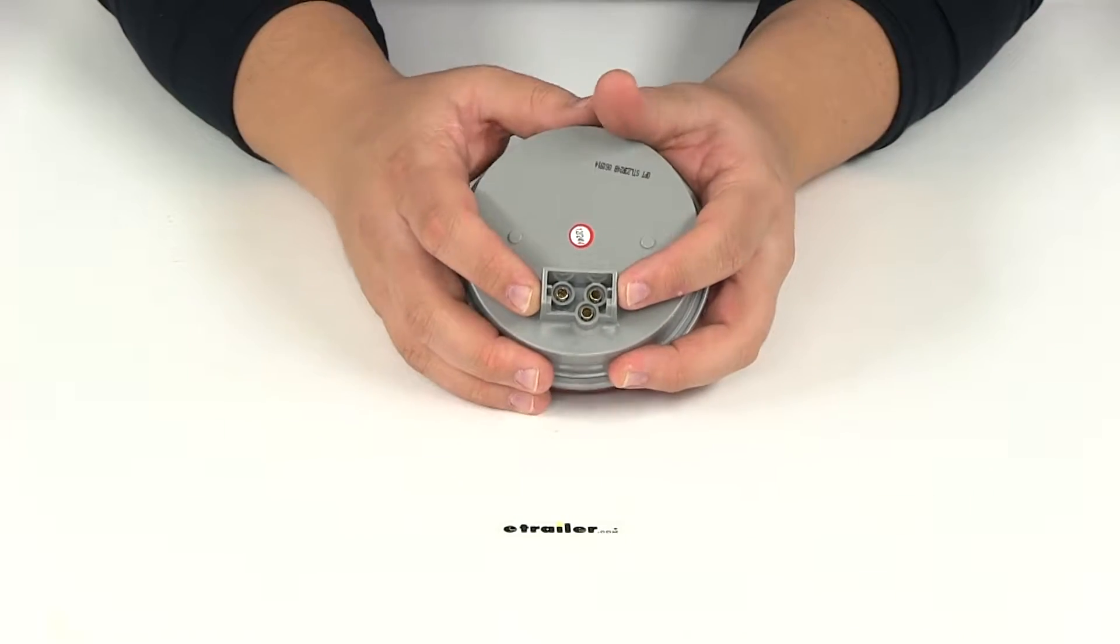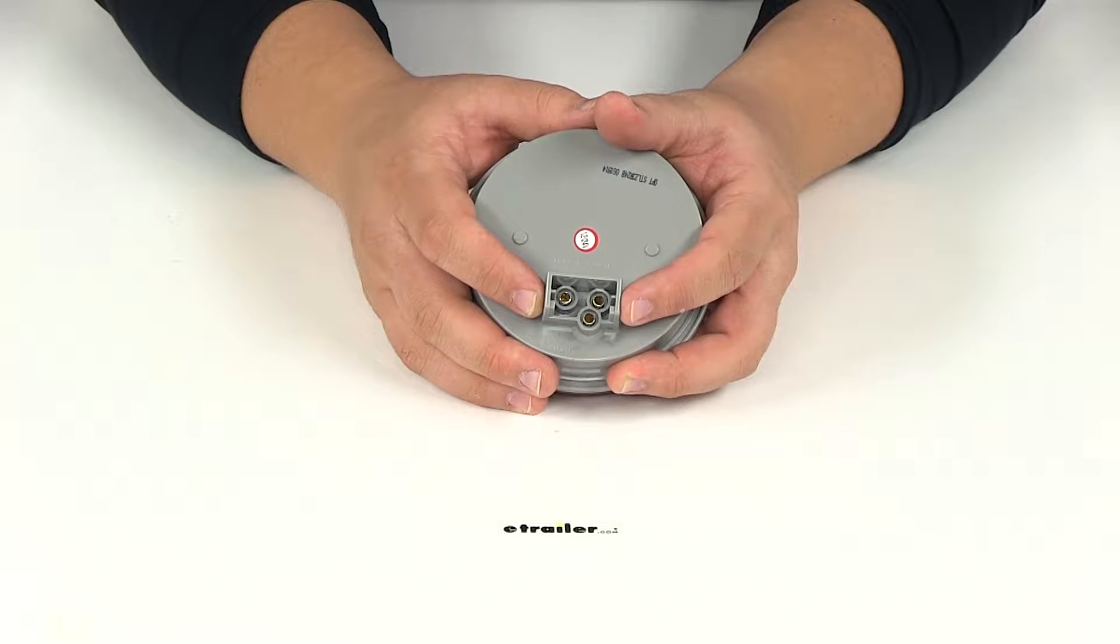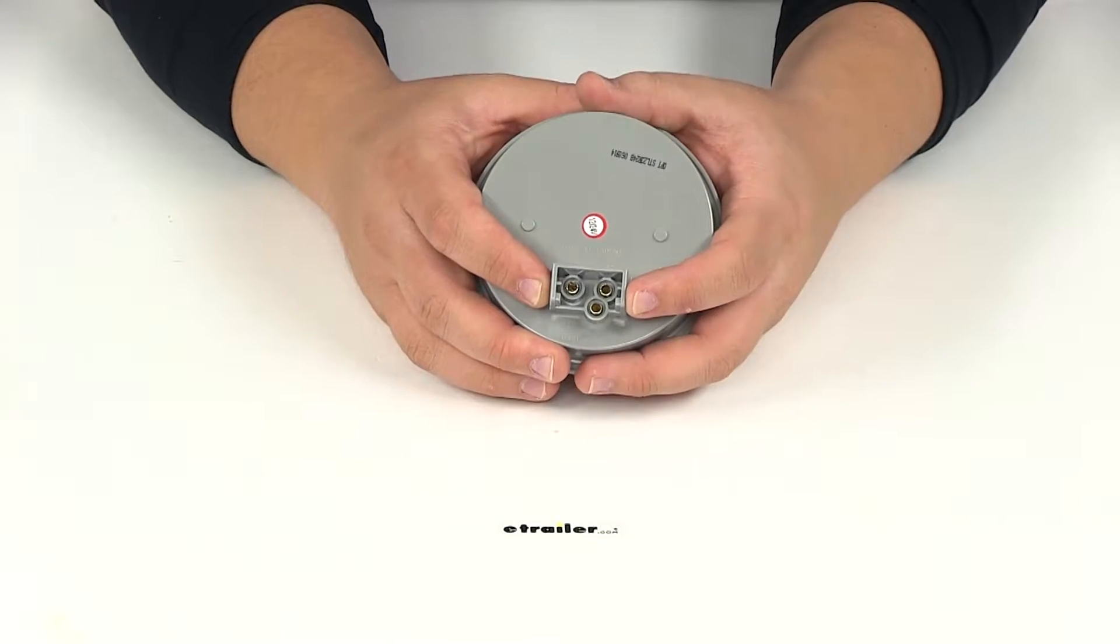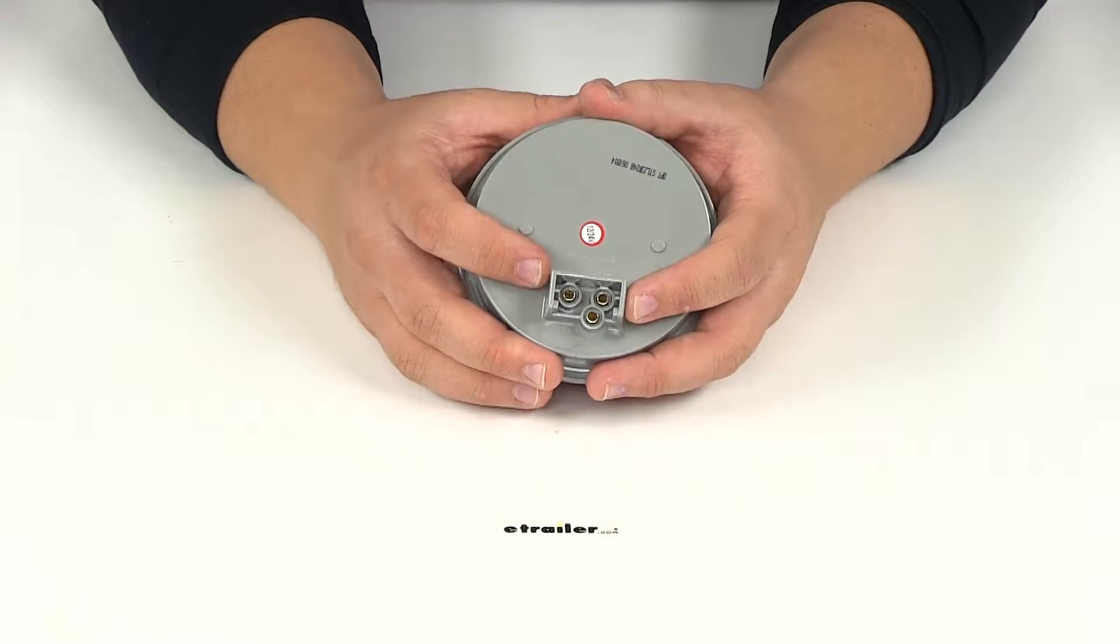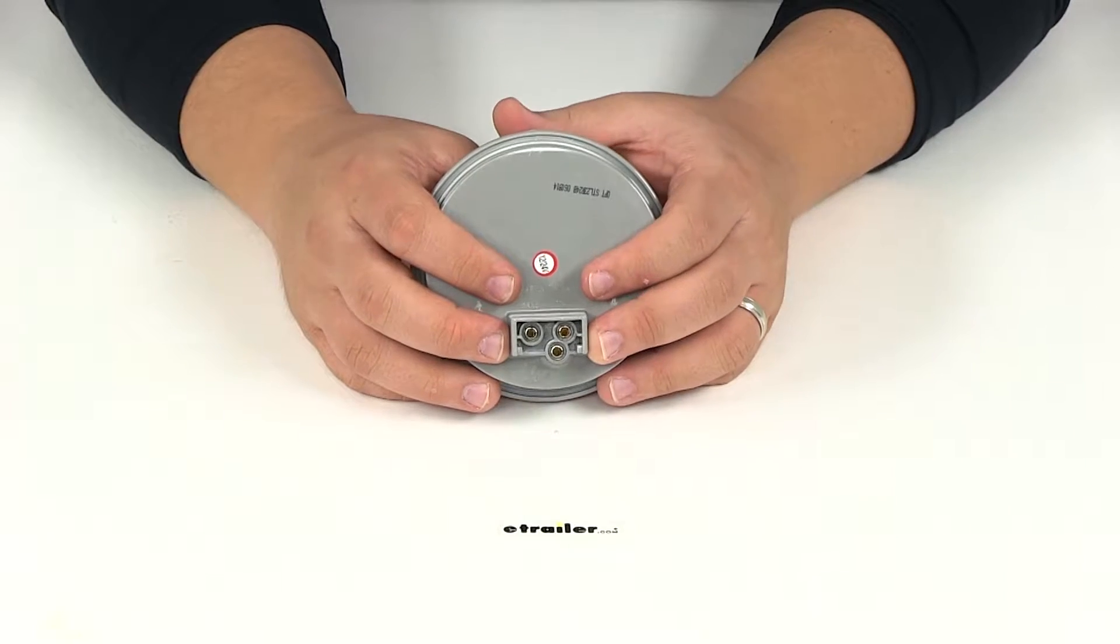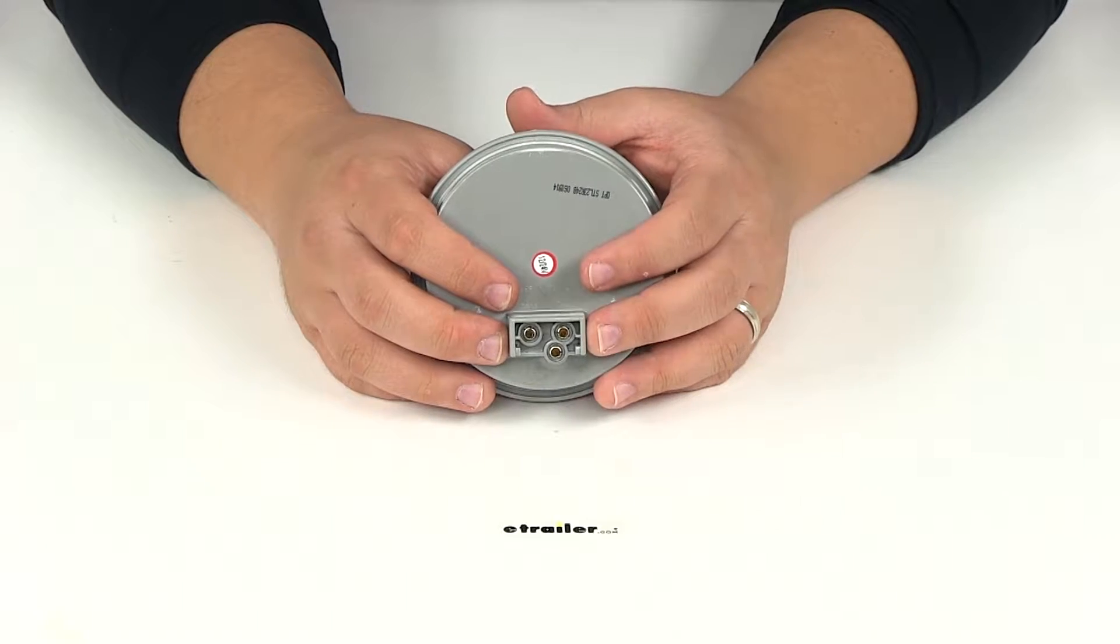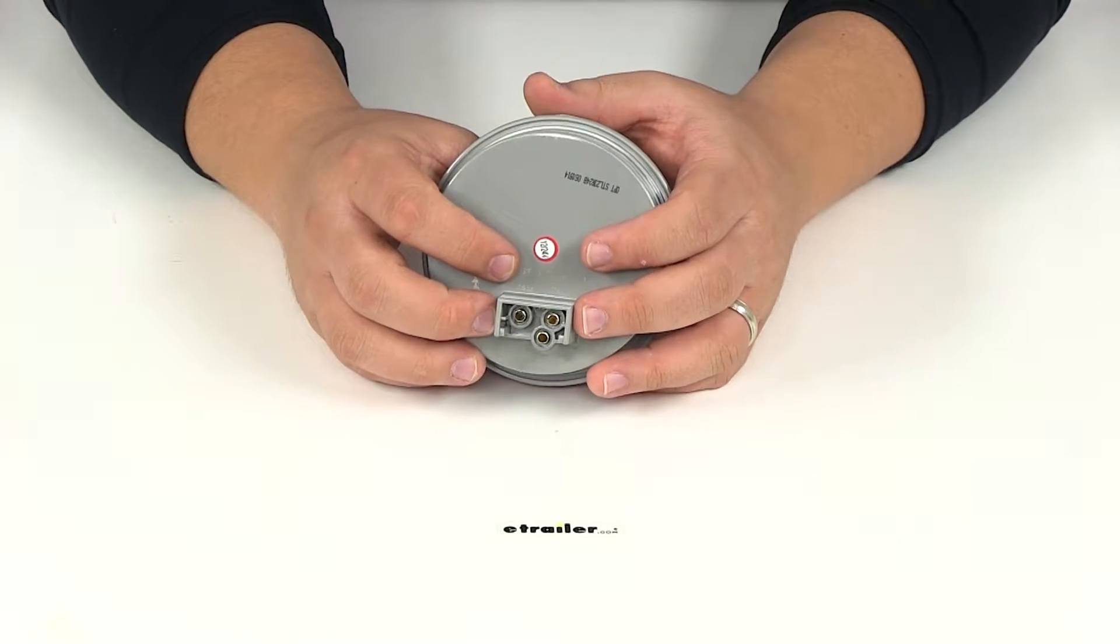Here on the back you can see the connection point. This is designed to accept your industry standard three-prong plug, which is sold separately. You can use part number A45PB for a straight three-wire plug or part number A47PB for a right angle pigtail plug.